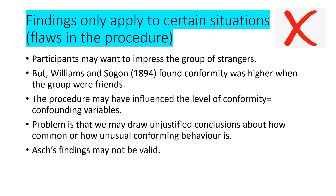A further limitation is that findings only apply to certain situations. Participants may have wanted to impress the group of strangers. Williams and Sogan (1894) found conformity was higher when groups were friends. If you're around strangers you may never see again, that affects conformity levels. Using strangers may have reduced conformity found, making this an uncontrolled confounding variable. Therefore, Asch's results may lead to unjustified conclusions about how common conforming behavior actually is.